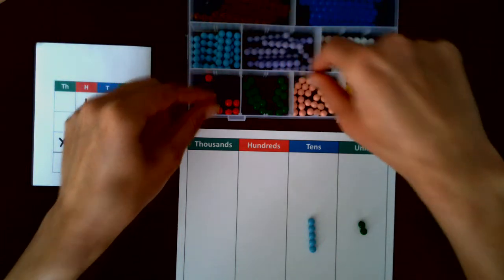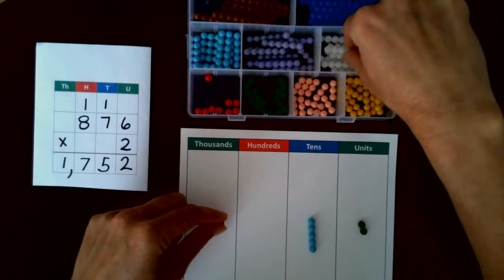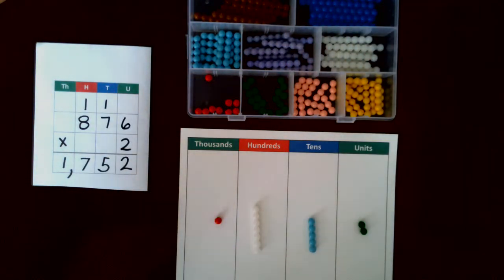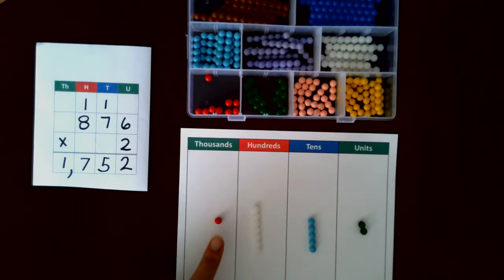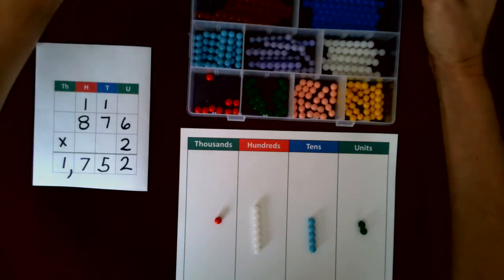Eight and eight is 16 plus one is 17, we need to make an exchange so one and seven. So our answer is one thousand seven hundred fifty two.